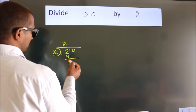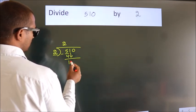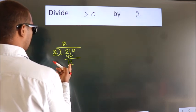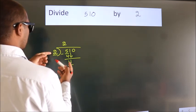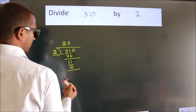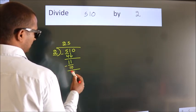After this, bring down the beside number. So 1 down. So 11. A number close to 11 in the 2 table is 2 times 5, which is 10. Now we subtract. We get 1.